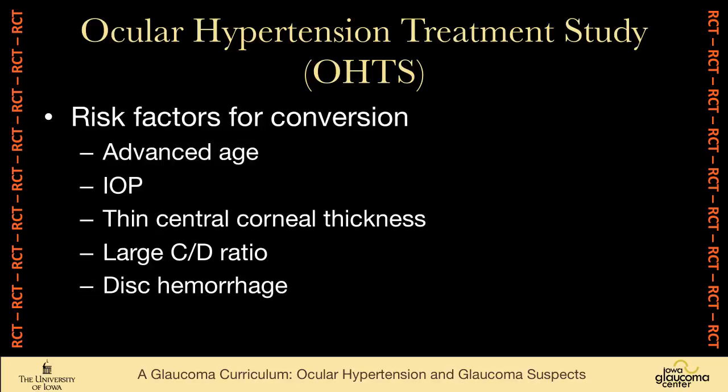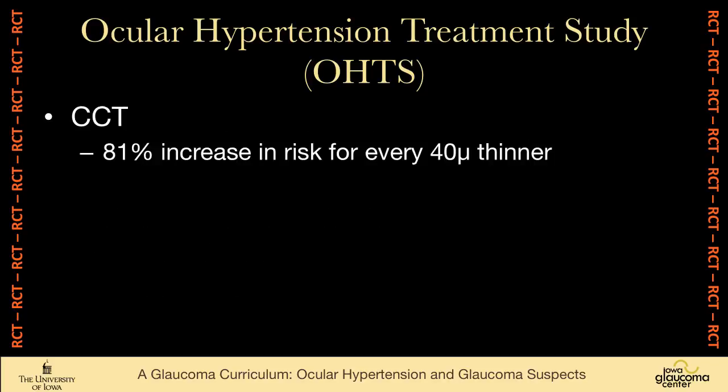The things that put people at risk for conversion are being older, the height of the intraocular pressure, having a thin central corneal thickness, having a large cup-to-disc ratio, or a disc hemorrhage. While corneal thickness has been discussed for years dating back to Goldmann when he invented the tonometer, it's really the OHTS study that cemented in our clinical practice the importance of central corneal thickness. There is an 81% increase in risk for every 40 microns thinner the cornea is, so central corneal thickness is a very important risk factor.